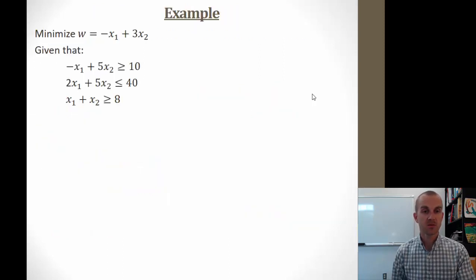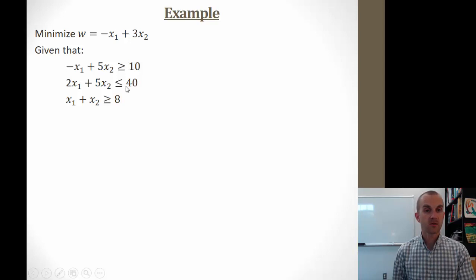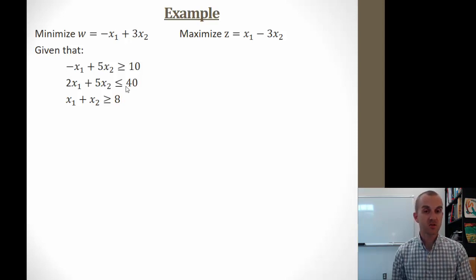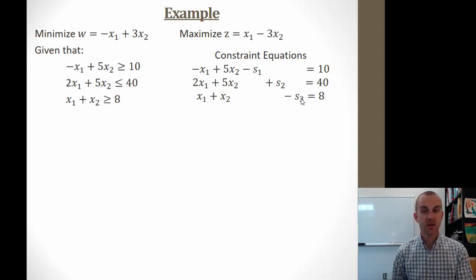Here is a minimization example: minimize w = −x₁ + 3x₂ with three constraints, where the second constraint is a less than or equal to. We can't handle that directly in minimization form, so we first convert it to a maximization by multiplying the expression by negative 1, keeping the same constraints. Now treating this as maximization with mixed constraints, we create our equations — the greater than or equal to constraints each get a negative 1 for their surplus variables — and build the simplex tableau.